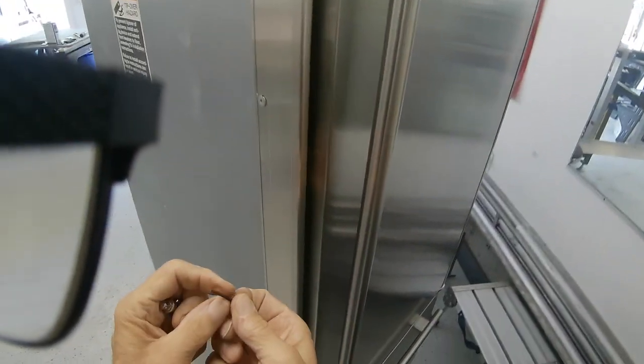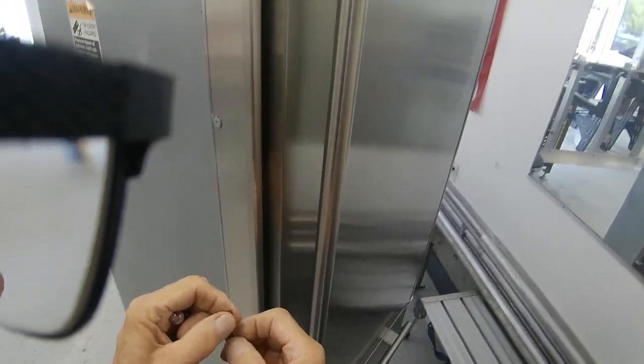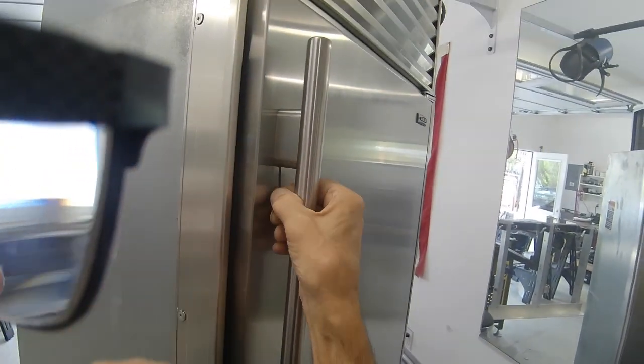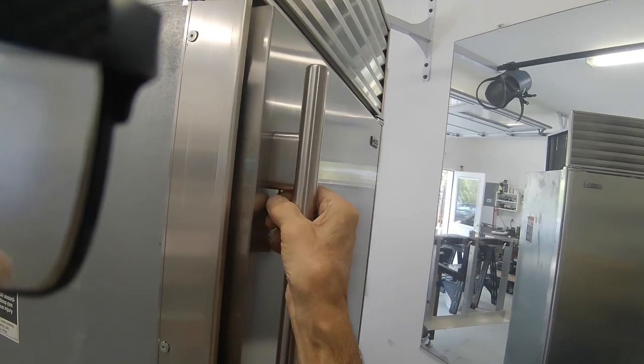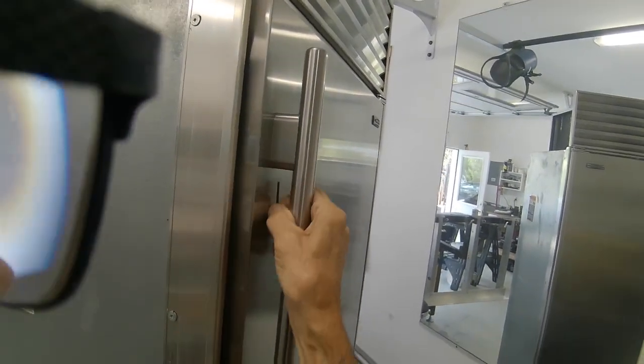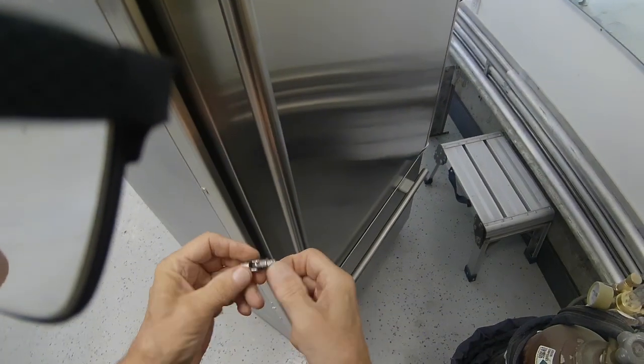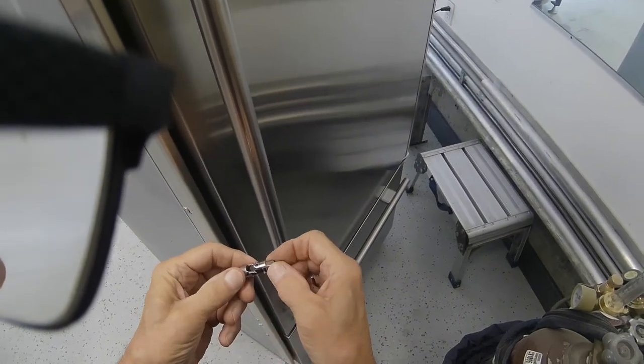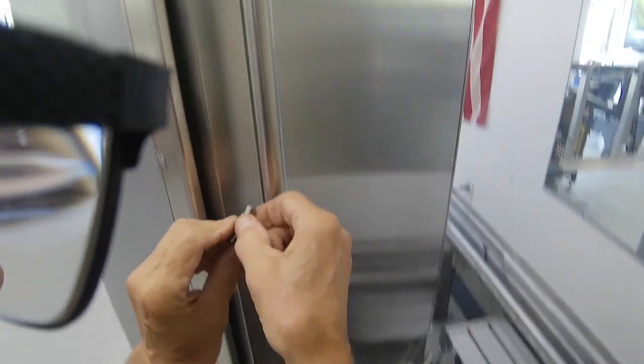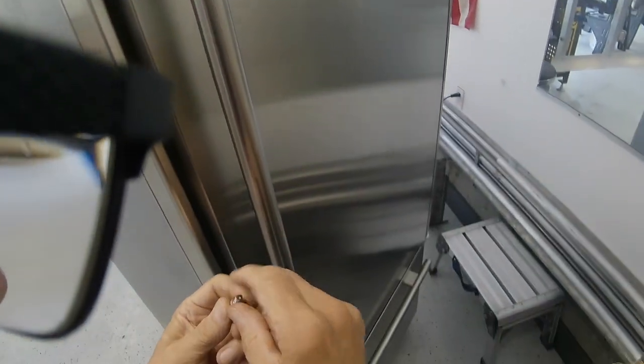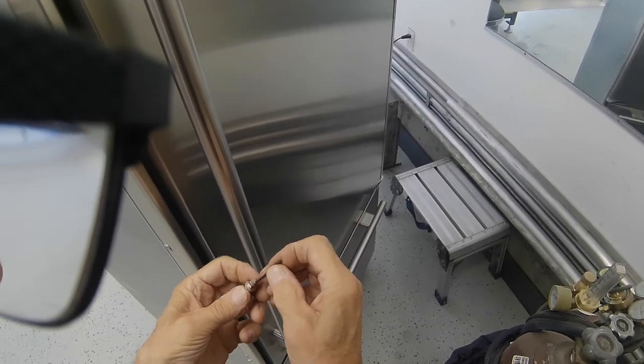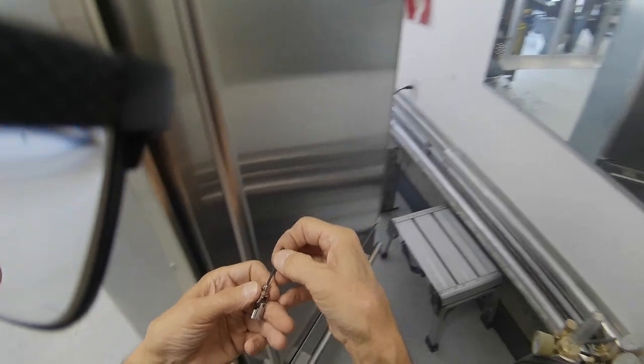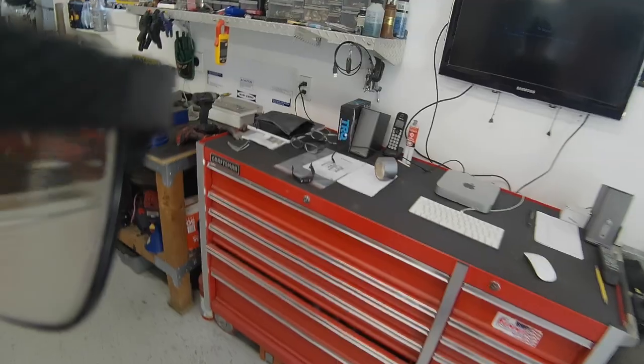So I took a 5/64 hex head which fits in here like so, right there, and then I'm going to take this quarter inch swivel because you need to get in there on an angle sometimes like that. I'm going to drill a hole through the center there and mount this hex key right in there and use this as a tool for tightening and loosening those handles.